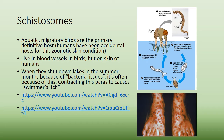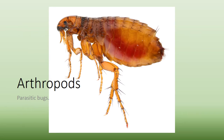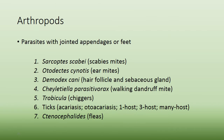Schistosomes are a type of fluke where aquatic migratory birds are the primary definitive host, and humans are the accidental host for this zoonotic skin condition. The schistosome lives in the blood vessels of birds but affects the skin of humans, causing swimmer's itch. This is why lakes are sometimes shut down in summer. The female parasite lives within the long deep grooves of the male's body. Eggs pass in feces into water, hatch, enter an aquatic snail, and through asexual reproduction produce motile swimmers that enter aquatic birds.